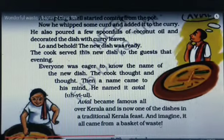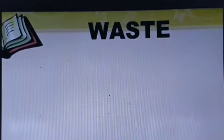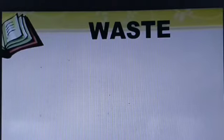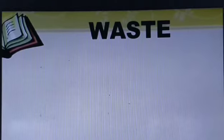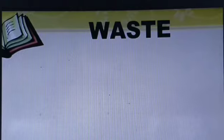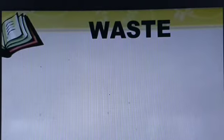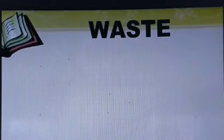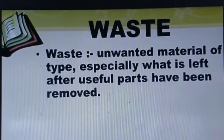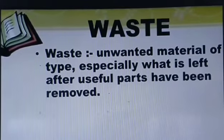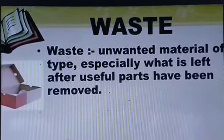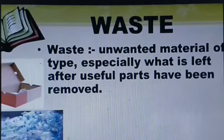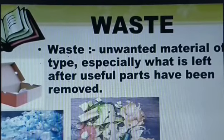Here the story ends. Before proceeding towards the explanation, first let us understand what is waste. Waste is any substance which is discarded after the primary use, or it is worthless or defective in some way and of no more use. In simple terms, waste is something that is thrown away because it is no longer useful. Some examples of waste can be an empty shoe box, used plastic bottles, vegetable or fruit peel, or old newspapers.